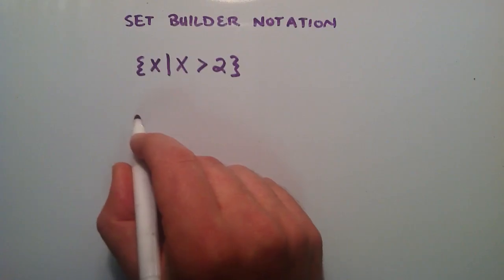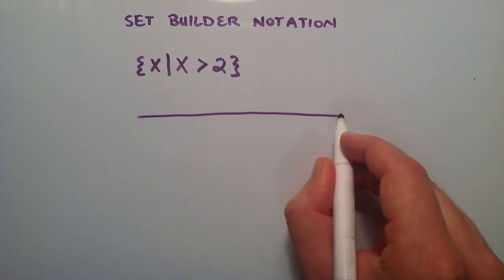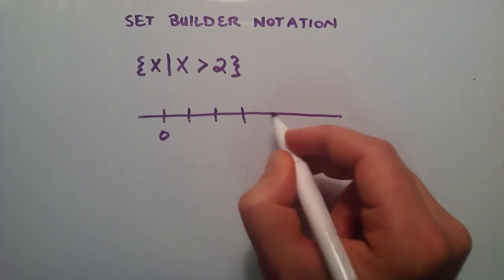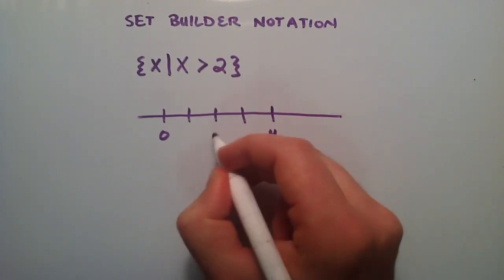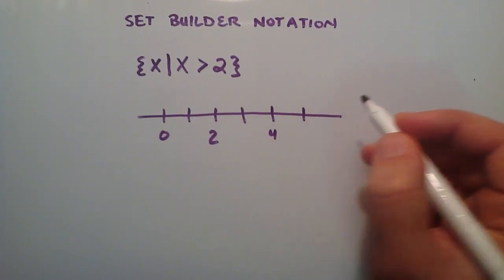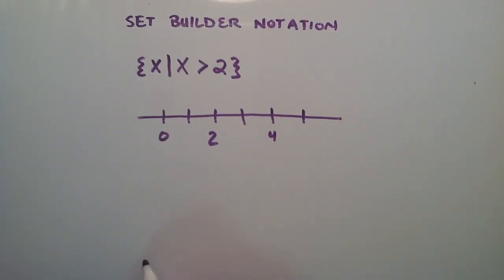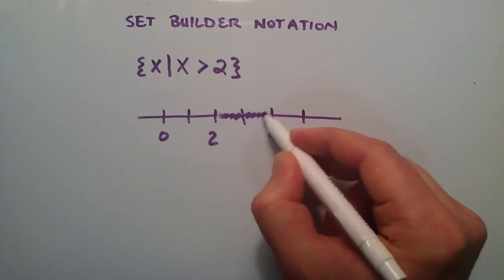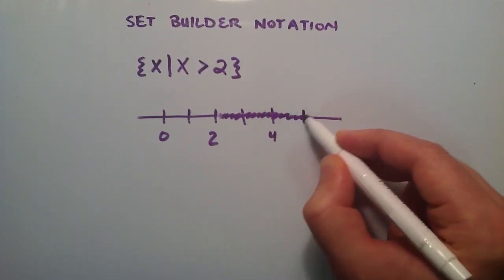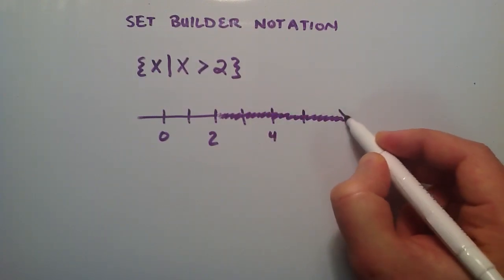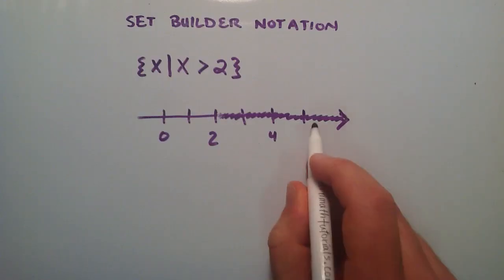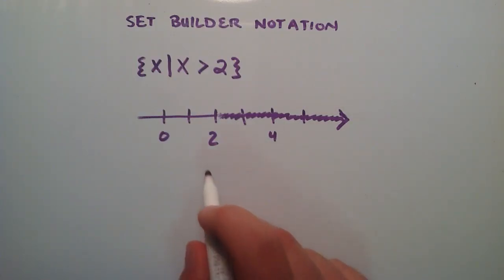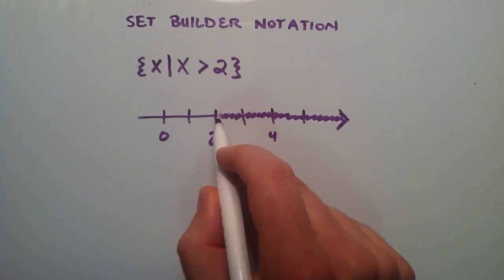If we were to draw this on a number line, we could put the number 0 here, the number 1, 2, 3, 4, and this just keeps going off into positive infinity. Then the first step we would take is we would shade in all of the values that are greater than the value 2. We'll put a little arrow here to show that all the numbers that go on in that direction are also included in our set. And so now at the value 2, we need to make a decision.